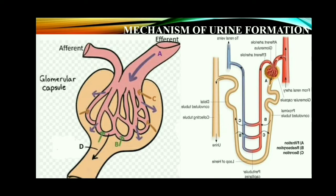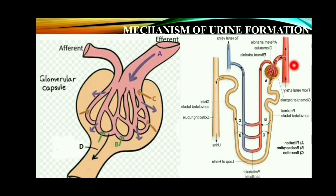The third process is tubular secretion. After tubular reabsorption, the urine passes through the loop of Henle and reaches the distal convoluted tubule. In the distal convoluted tubule, hydrogen ions and potassium ions are secreted into the tubule. This tubular filtrate is finally known as urine. At this point, the urine is hypertonic in humans — meaning it is concentrated urine, with extra water removed.